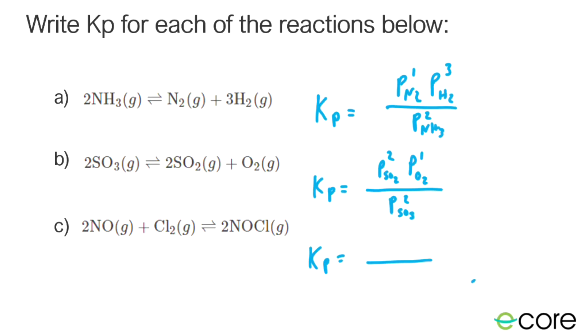Now, up top, we're going to have our only product, which is NOCl. We're going to put our big P here, and we're going to raise that to the second power. And then on the bottom, we have PNO raised to the second power, and PCl2 raised to the first power. So that's writing a few different Kps.